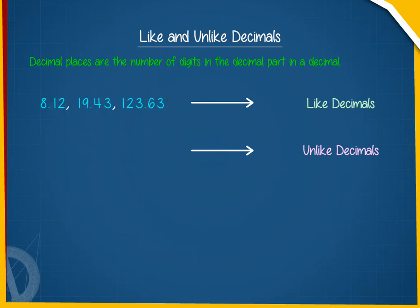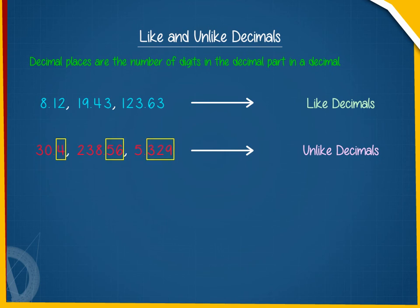Similarly, 30.4, 238.56, and 5.329 are unlike decimals because their decimal places are different.